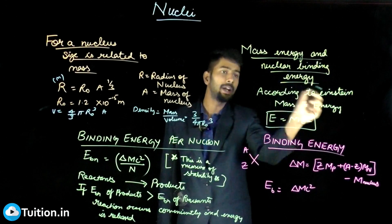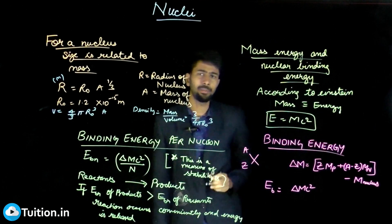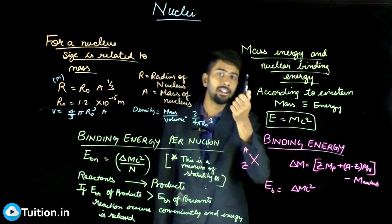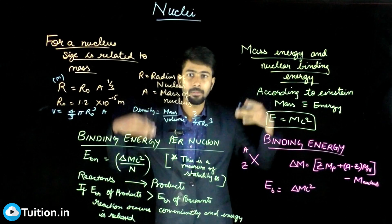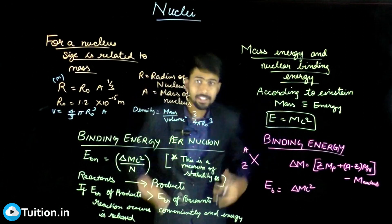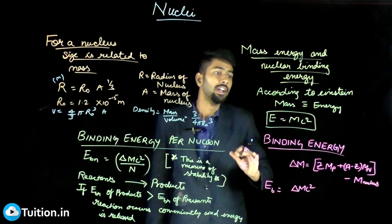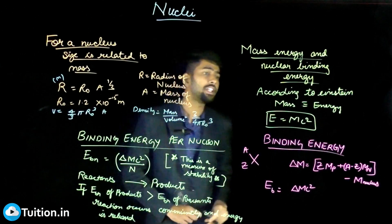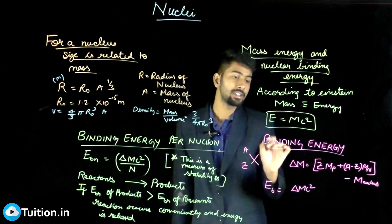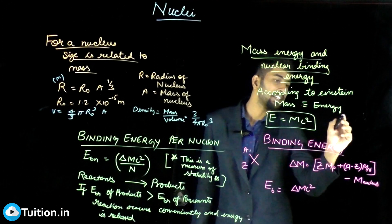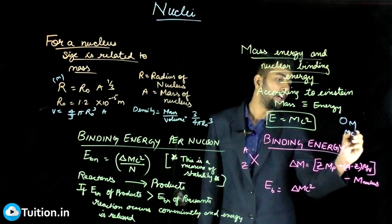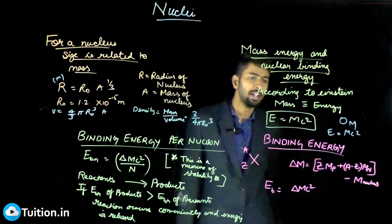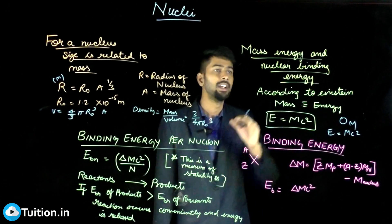Next, we move on to mass-energy and nuclear binding energy. Mass-energy is a very basic concept. According to Einstein, mass is equivalent to energy. If I have any mass, it has some energy. If that mass gets disintegrated, it can be converted to energy. Any body with mass has energy stored in the form of its mass. The relation is E = mc². If a body has mass m, then m × c² is the energy associated with that mass.